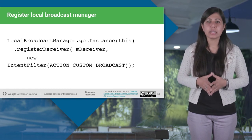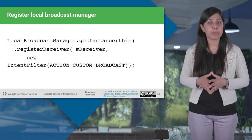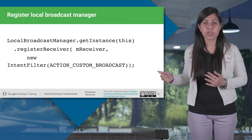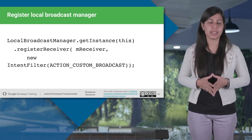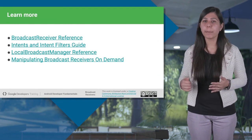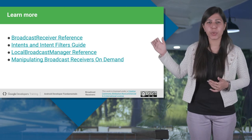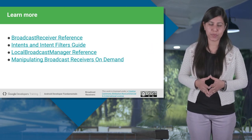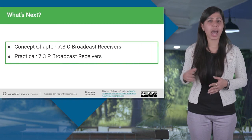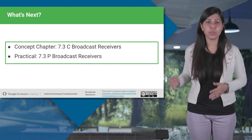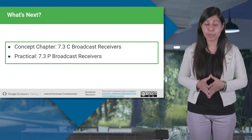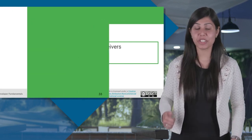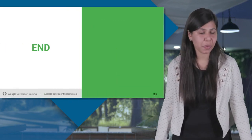After that, the receiver has the ability to get broadcasts with the action named ACTION_CUSTOM_BROADCAST. To learn more, be sure to check out the reference links about broadcast receivers. Our next practical will help you practice the implementation of broadcast receivers. Keep learning and thanks for watching.